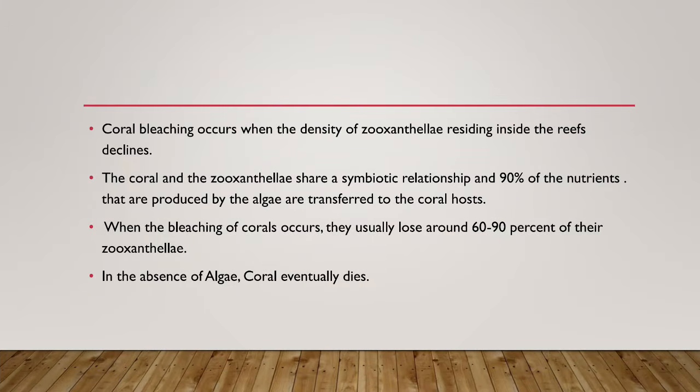Coral bleaching occurs when the density of zooxanthellae living inside the reefs declines. Corals and zooxanthellae share a symbiotic relationship, and 90% of the nutrients they need are produced by the algae, which are then transferred to the coral host. When bleaching occurs, corals usually lose around 60–90% of their zooxanthellae, and in the absence of the algae, the coral eventually dies.